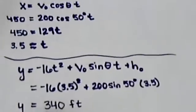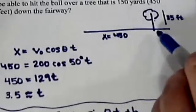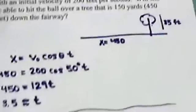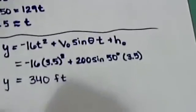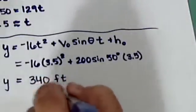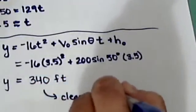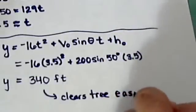So what that tells us is that when we get 3.5 seconds down to where this tree is, our ball is going to be 340 feet in the air, which will be plenty enough to clear the tree. So we will clear the tree pretty easily.